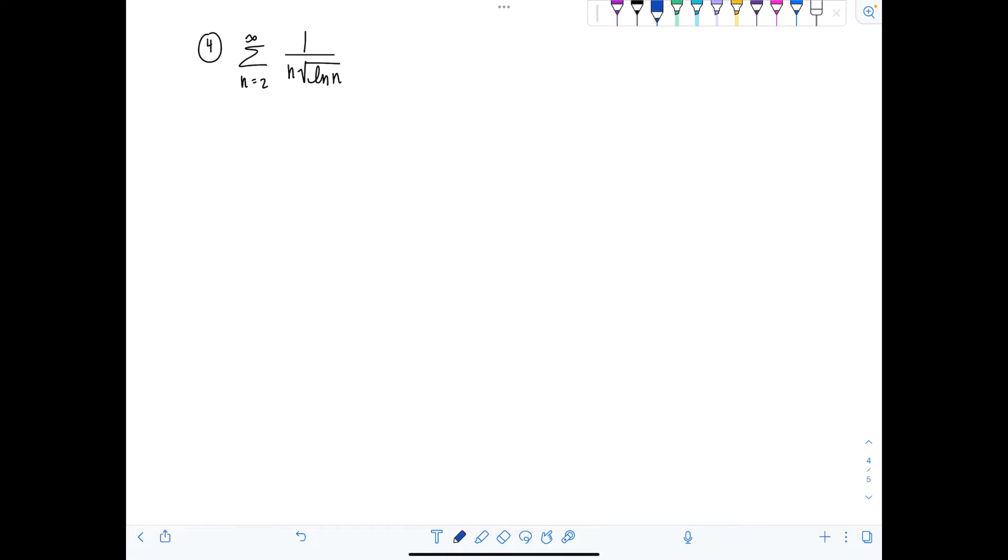So here's the next example. Example number four, we have the sum n equals two to infinity of one over n times square root of natural log of n. I'm looking at this and imagining if this was a function, if I was trying to integrate this and I had one over x rad natural log of x, u substitution would work out nicely because the derivative of natural log of x is one over x, which I pretty much have right there. So I'm leaning towards the integral test.